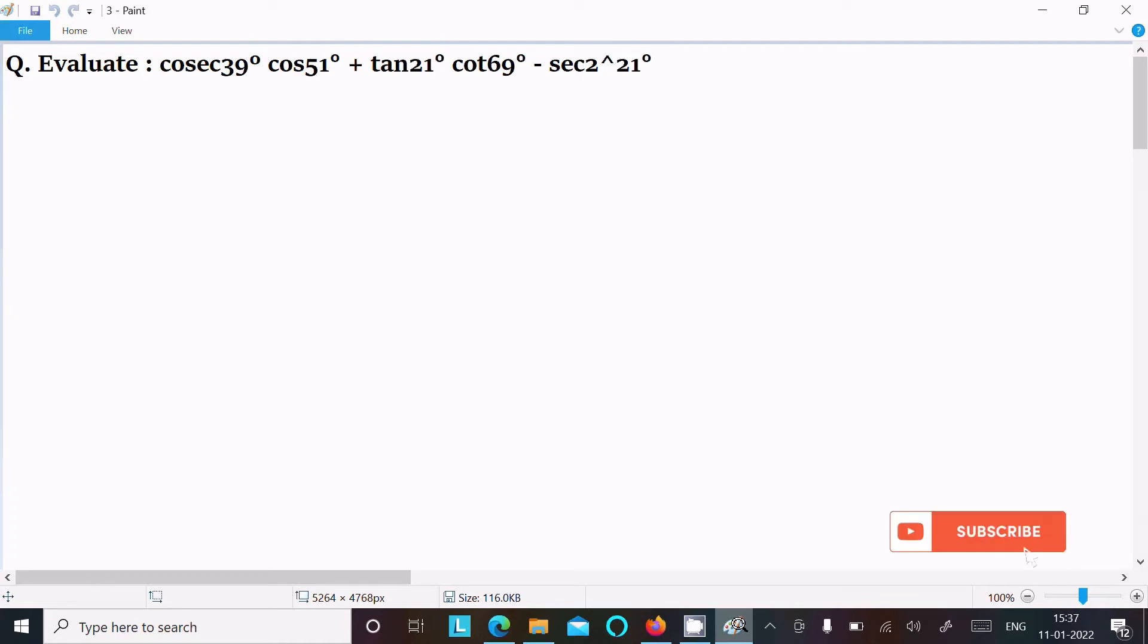In this video lecture, I am going to evaluate cosec 39° cos 51° + tan 21° cot 69° - sec² 21°.